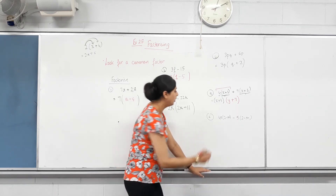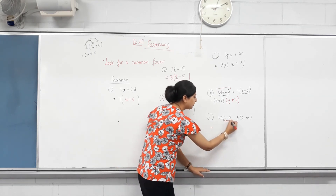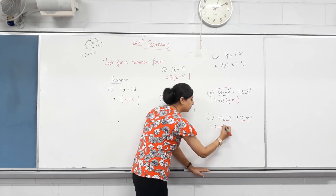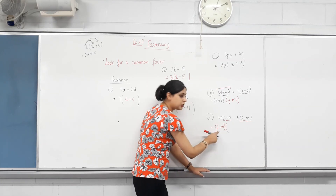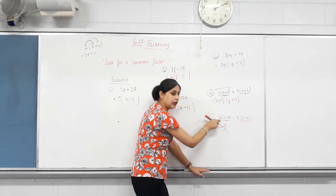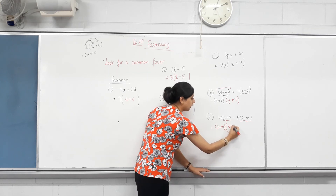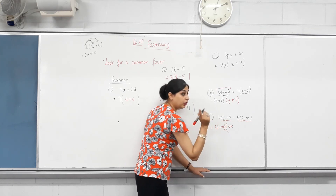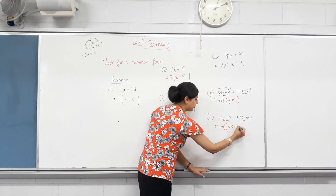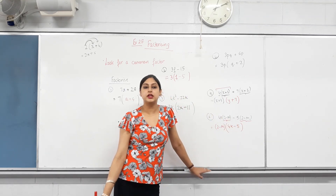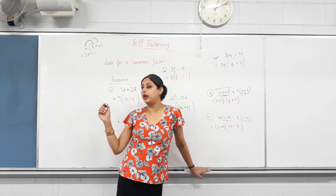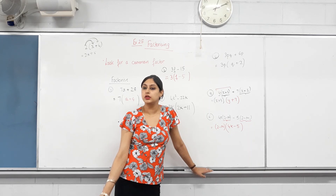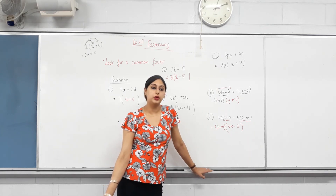Next one — what is the common term? The bracket (2 − m) is common to both terms. If you divide the first term by (2 − m), what remains? Five. If you divide the second term by (2 − m), what remains? Negative five. And that's it. That's simple factorization by taking out the highest common factor, which can be a binomial with two terms. Any questions? Good.